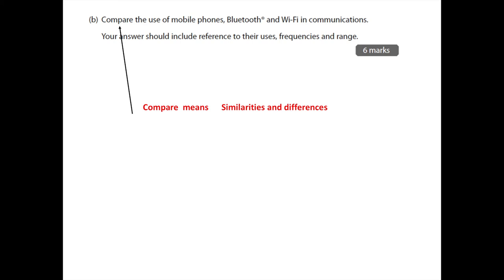So this is a six mark question and it says compare the use of mobile phones, Bluetooth and Wi-Fi communications. Your answers should include reference to their use, frequencies and range. So compare means the similarities and differences. And you need to look at the similarities of uses of Bluetooth, Wi-Fi mobile phones, the similarities or differences in frequency and the similarities and differences in range. If you don't answer all three of those sections, you won't be able to get up to six marks. So have a go at this and I'll go through the answers in a minute.